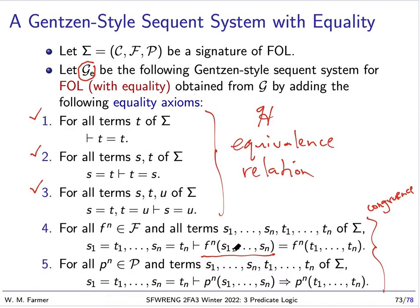The first one says if we have a function application and we change the arguments to new arguments, as long as these new arguments are all equal, then we'll get a new function application which will be equal to the other one. In other words, we can do equals for equals.